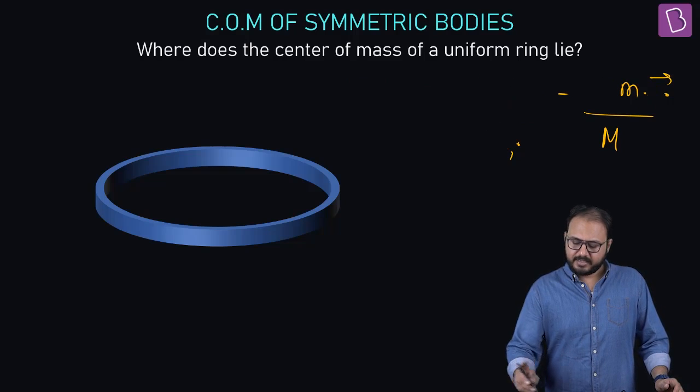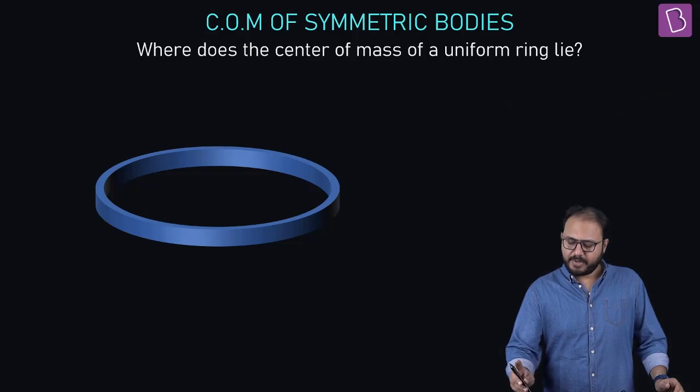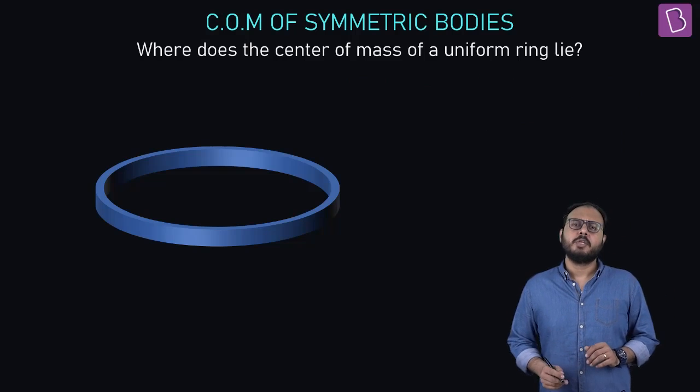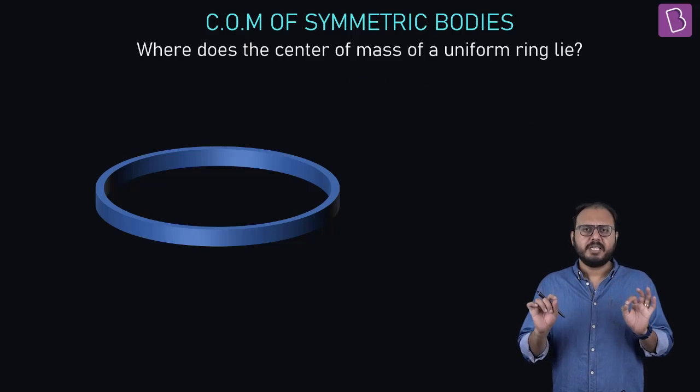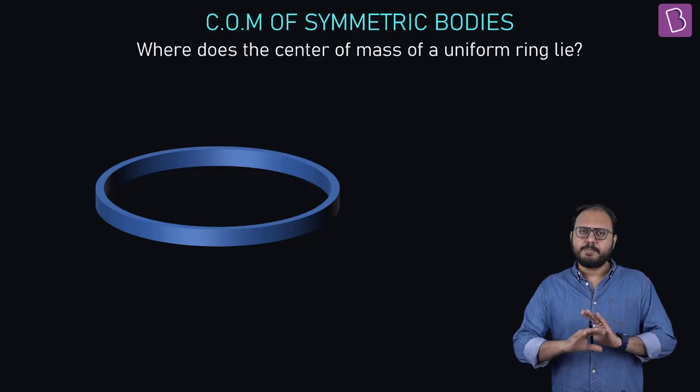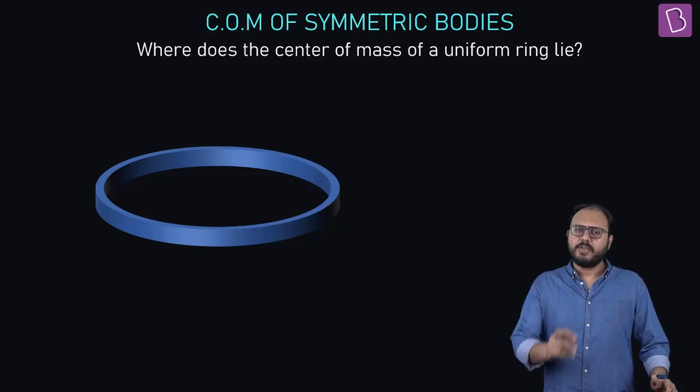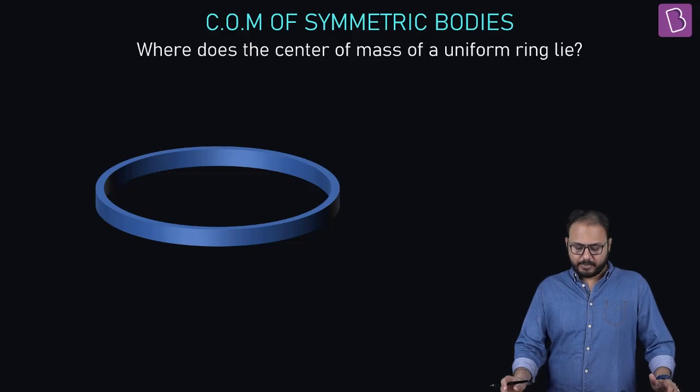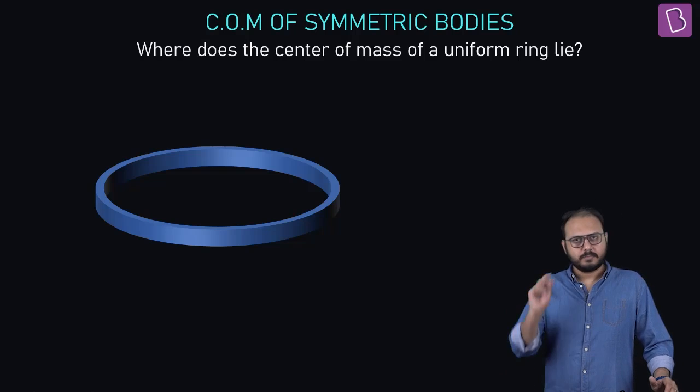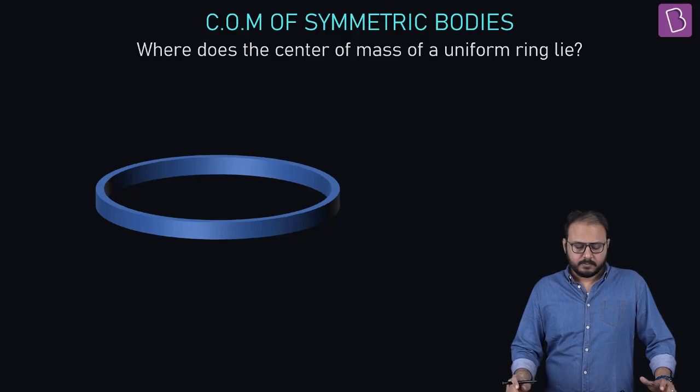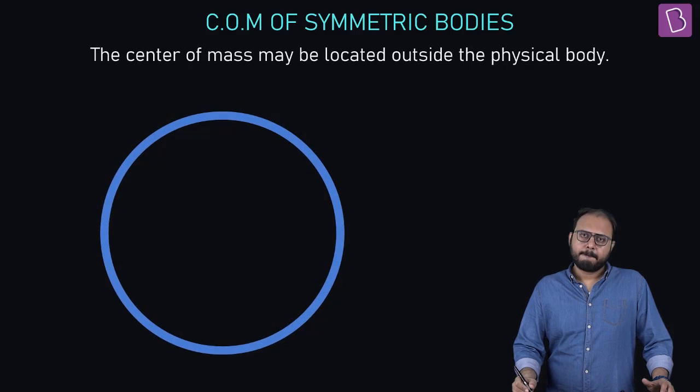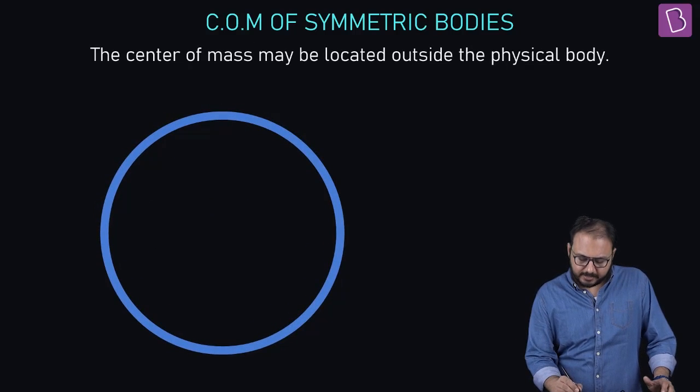Where do you think the center of mass of a uniform ring lie? Uniform. Uniform means made up of same material, same density, absolute uniform. Where do you think its center of mass will be? Think about it. It would be at its center.